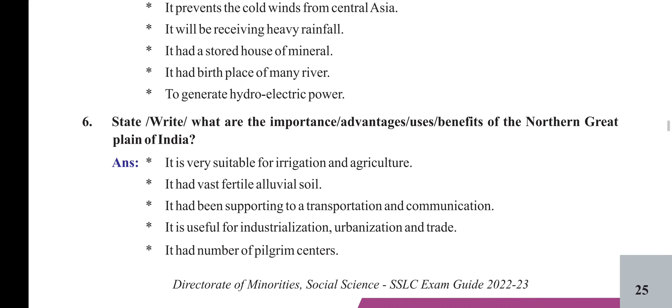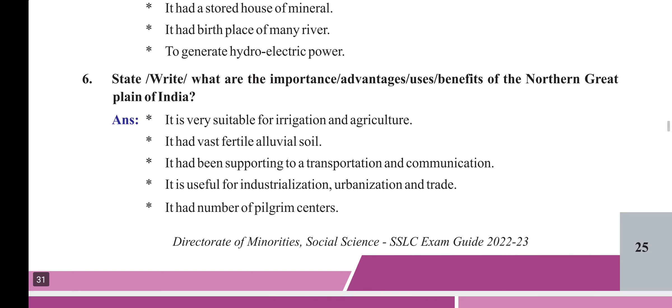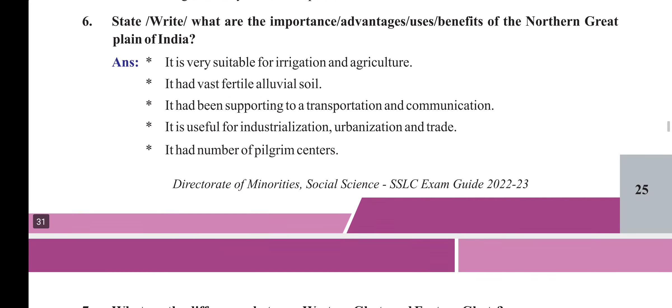What are the importance or advantages of the northern great plain of India? It is very suitable for irrigation and agriculture. It has vast fertile alluvial soil. It supports transportation and communication. It is useful for industrialization, urbanization, and trade. It has a number of pilgrim centers.